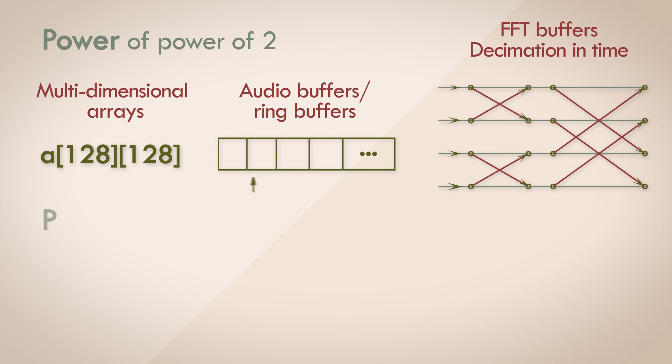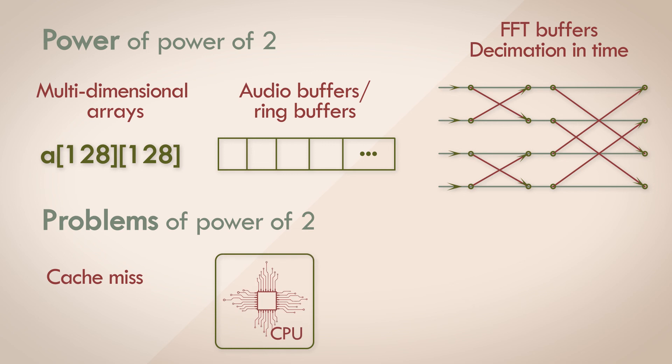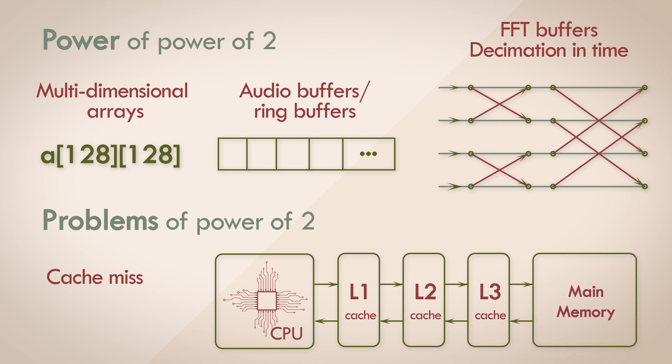But there can be unintended consequences while using power of 2 sized data structures. A cache miss could cause significant performance hits to a running application if the data structure cannot be fully held within a CPU cache, which is also a power of 2 structure. If the caching cannot be done, the program would have to fetch data from a higher level cache, or from memory, which can be slow. It's beyond the scope of this video, but I've linked a couple of articles which talk about cache misses.